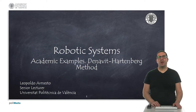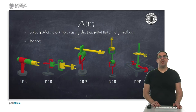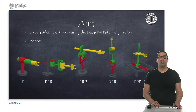Hello. In this presentation I will show how to obtain Denavit-Hartenberg parameters of classic robots used in many academic examples. The aim is to solve the forward kinematics of some robot manipulators using the Denavit-Hartenberg method. In the following slides I will explain how to set reference frames for each link and how to obtain the associated parameters. Note that there are some ambiguities regarding the direction of some axes, so the solution is not unique, but they represent the same forward kinematic model.